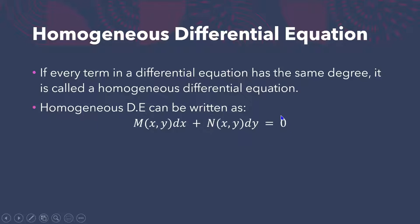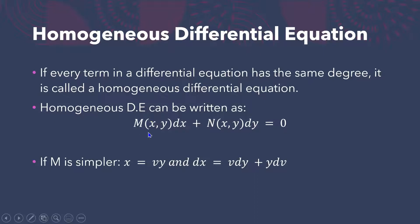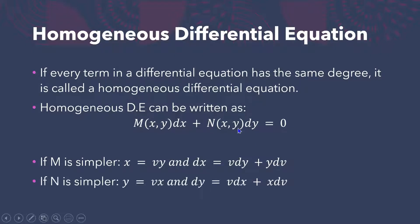The homogeneous differential equation can be written as M as a function of x and y in terms of dx, and N as a function of x and y in terms of dy. M is in terms of dx and N is in terms of dy. To solve it, we check which of the M and N functions is simpler. If M is simpler, we let x = vy and dx = vdy + ydv. If N is simpler, we let y = vx and dy = vdx + xdv.